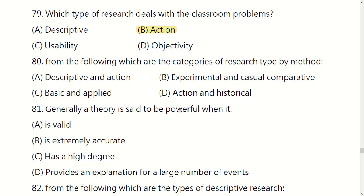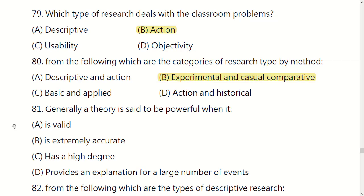From the following, which are the categories of research by type? You have four options. The right option is B. Generally a theory is said to be powerful when it: is valid, is extremely accurate, has a high degree, or provides an explanation for a large number of events.